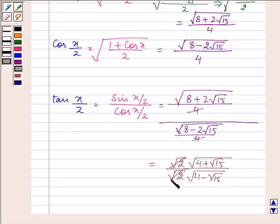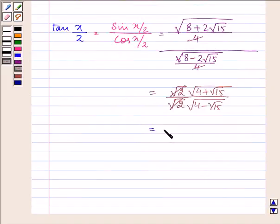After rationalizing, we have the value of tan x/2 as 4 + √15.